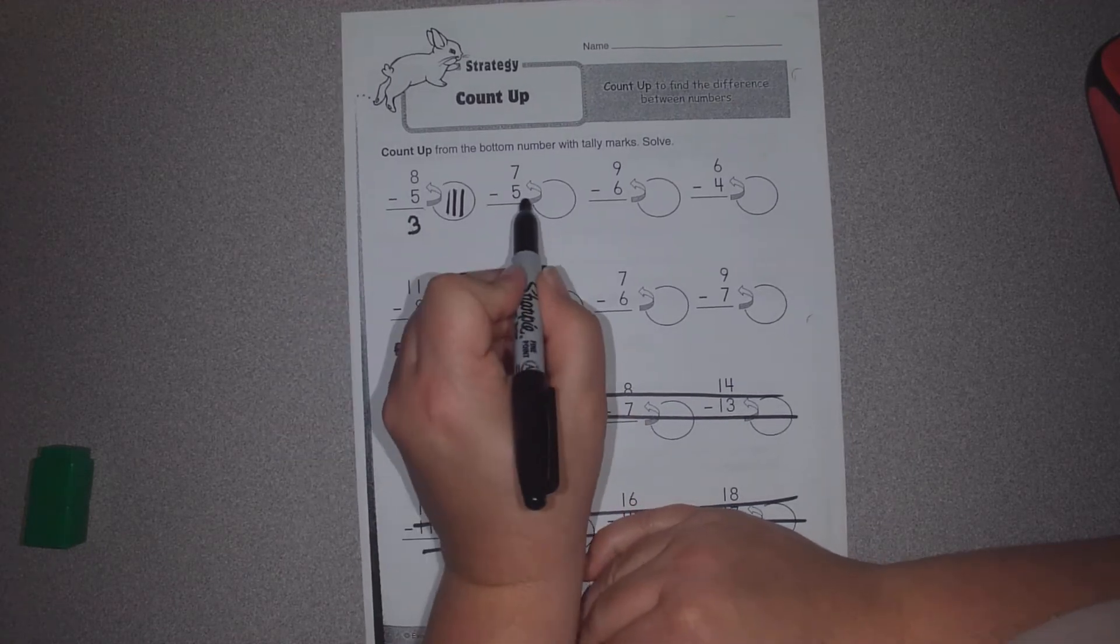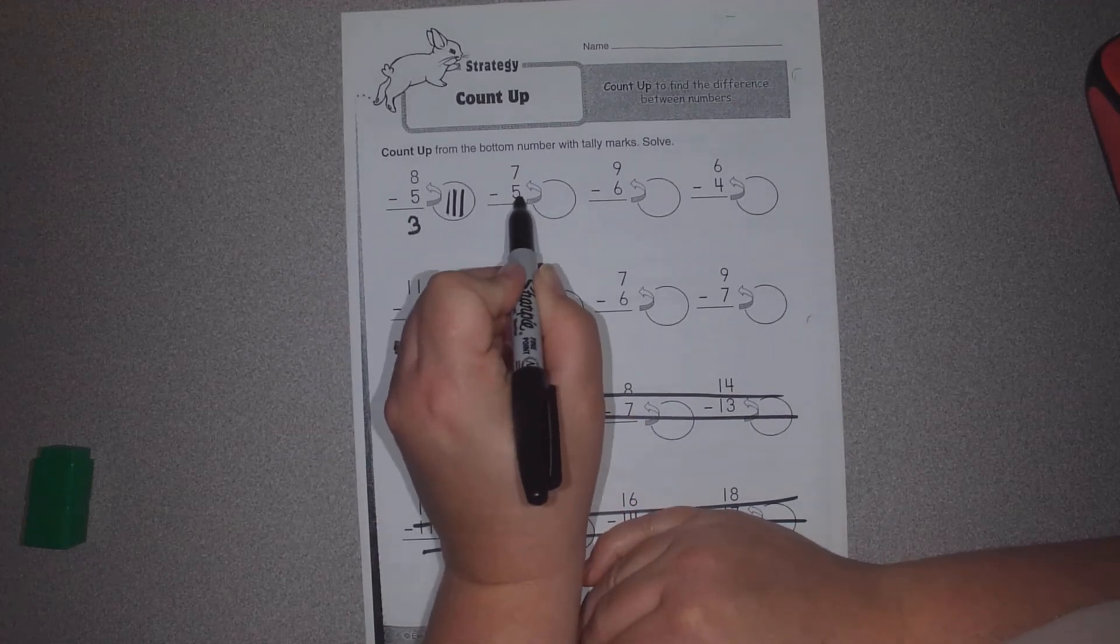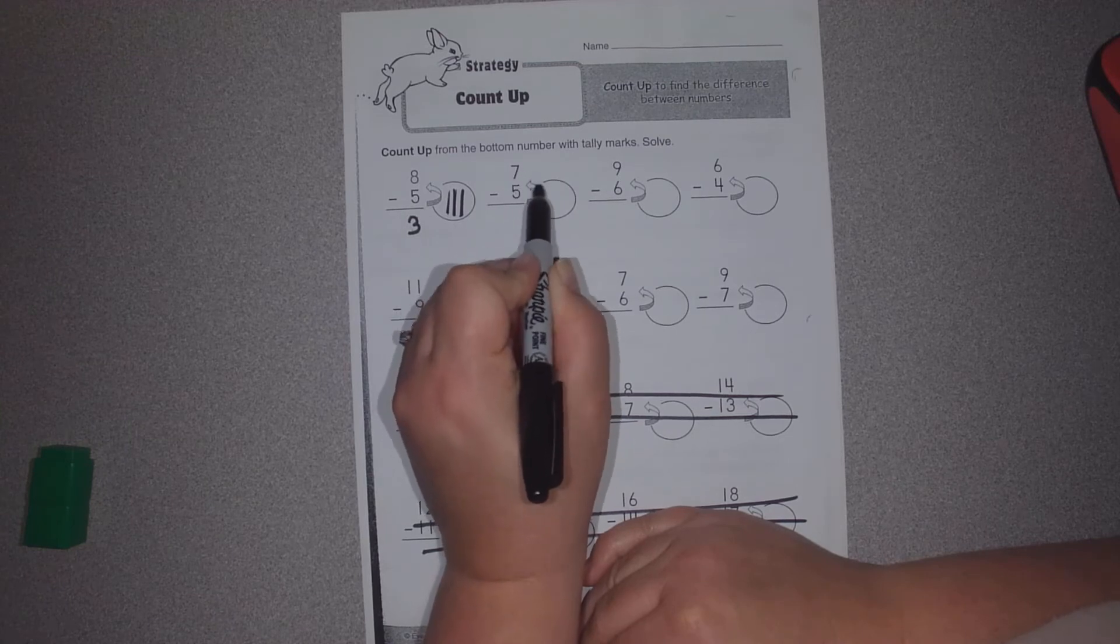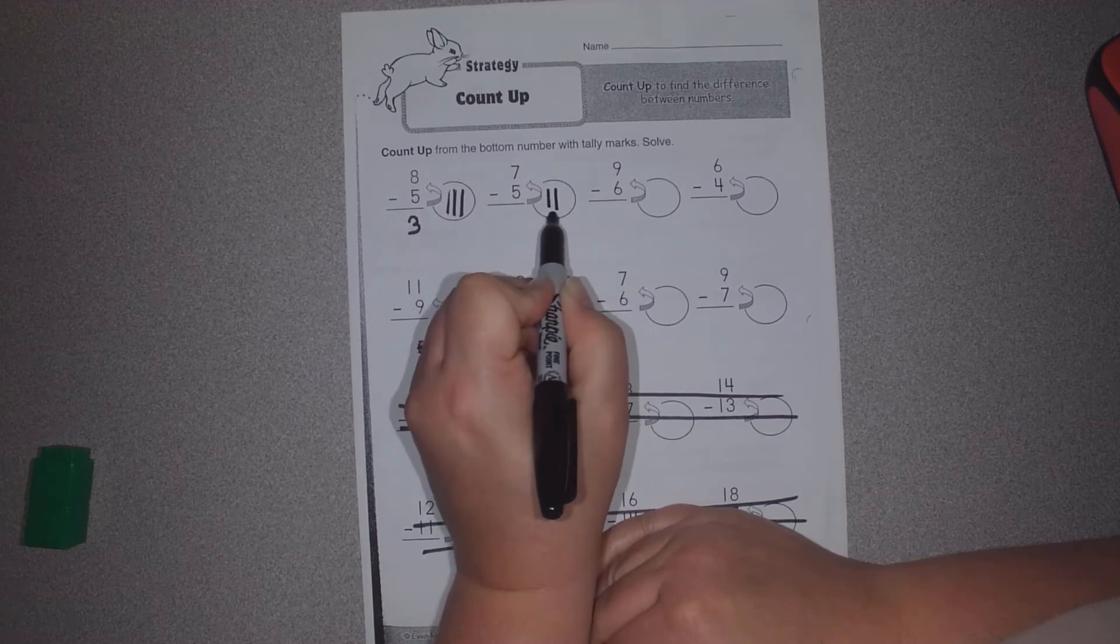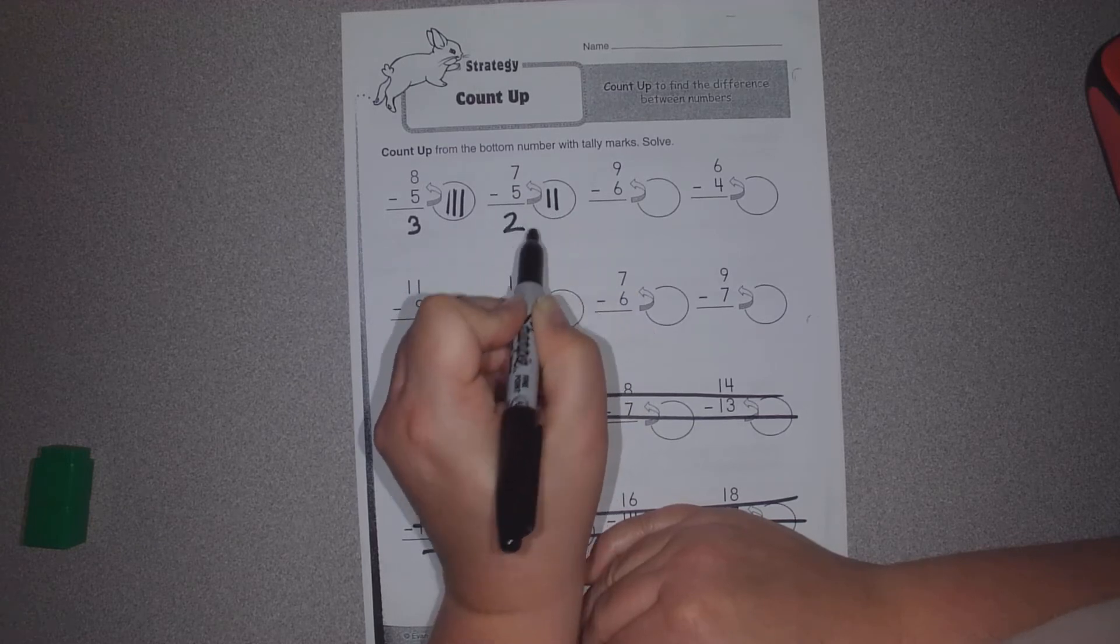Let's try again. We want 7 minus 5. What's the difference? We're going to count up. We'll hold the 5. 6, 7. How many jumps did I make? 2 jumps.